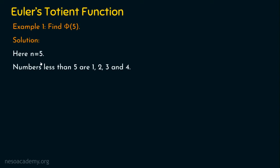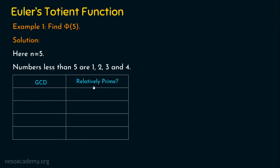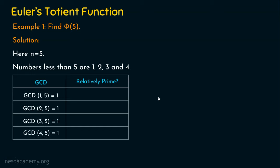As we understood in the last presentation, two numbers are relatively prime when their GCD is 1. I recommended using the Euclidean algorithm to compute GCD. So we are going to compute GCD of 1,5; GCD of 2,5; GCD of 3,5; and GCD of 4,5.